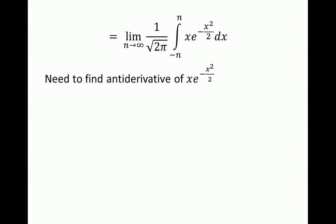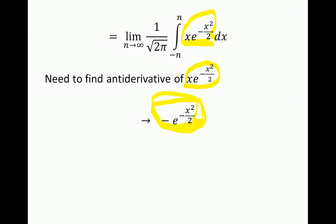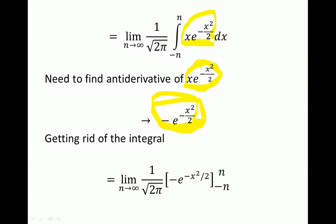To evaluate the integral we need the antiderivative of the expression inside. The antiderivative is this expression, which you can verify by taking the derivative with respect to x to recover the original term. We apply the antiderivative and evaluate it from the lower bound of negative n to the upper bound n, taking the limit as n goes to infinity.